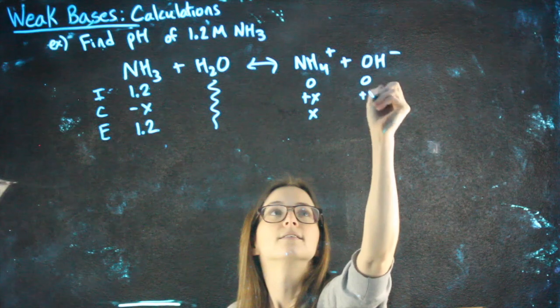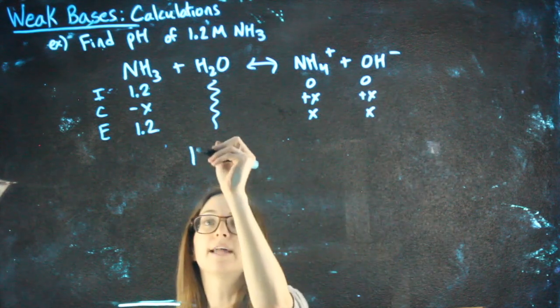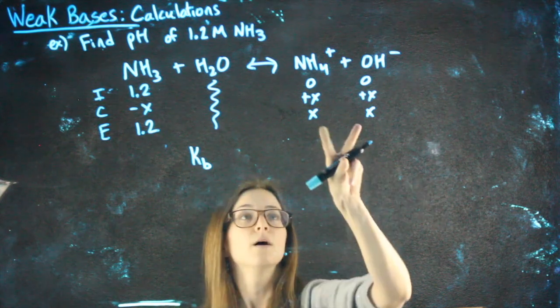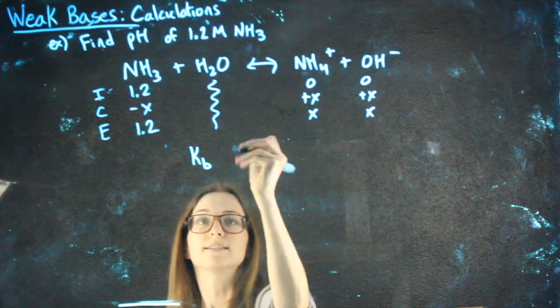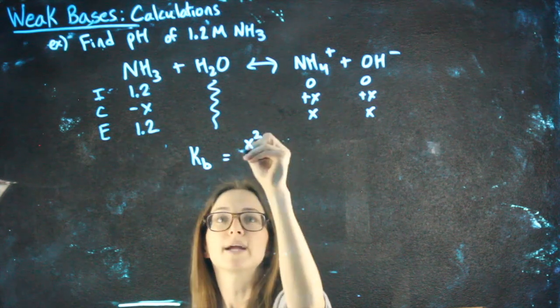Zero plus x, and then I can do my K expression. It'll now be a KB, products over reactants. So x times x, which is x squared, over reactants.